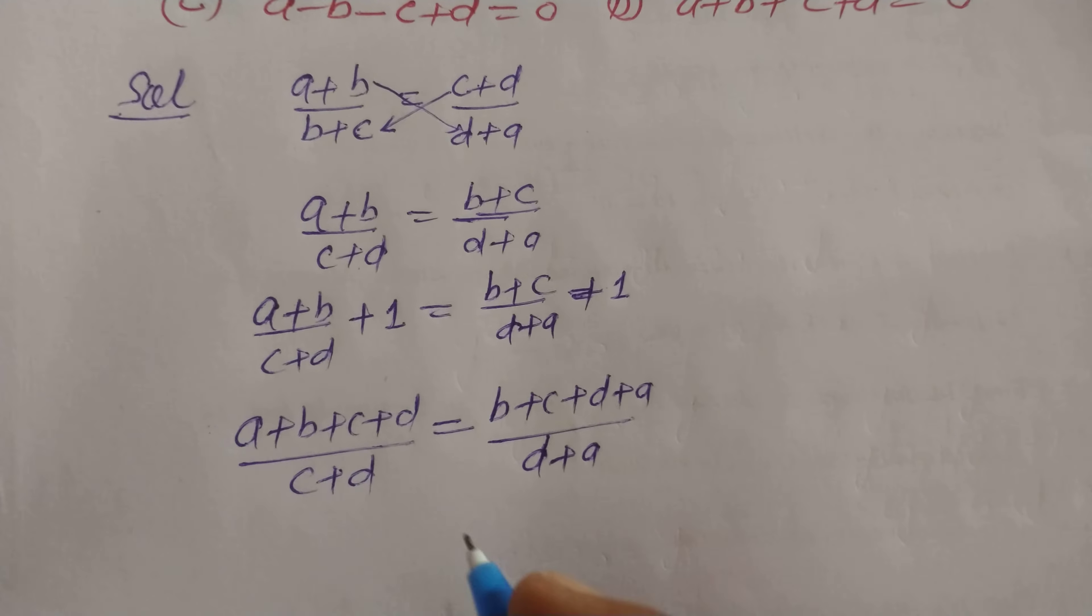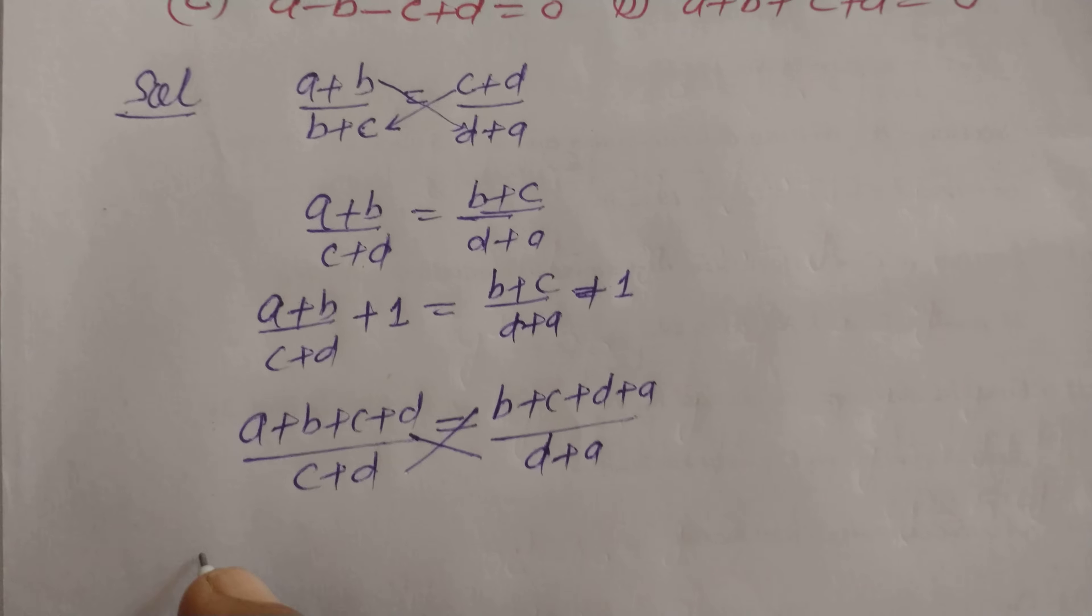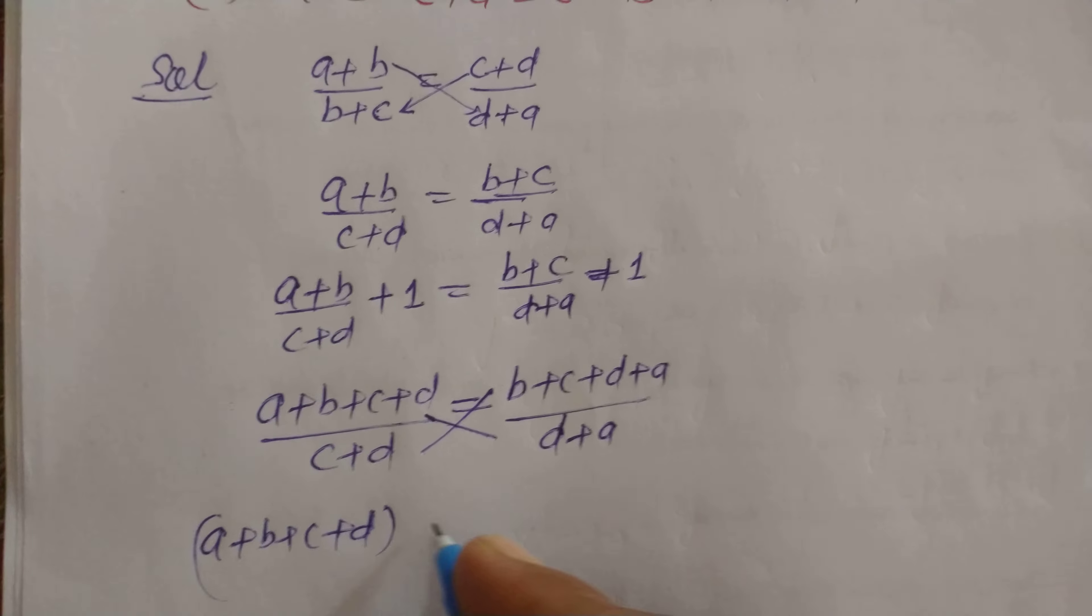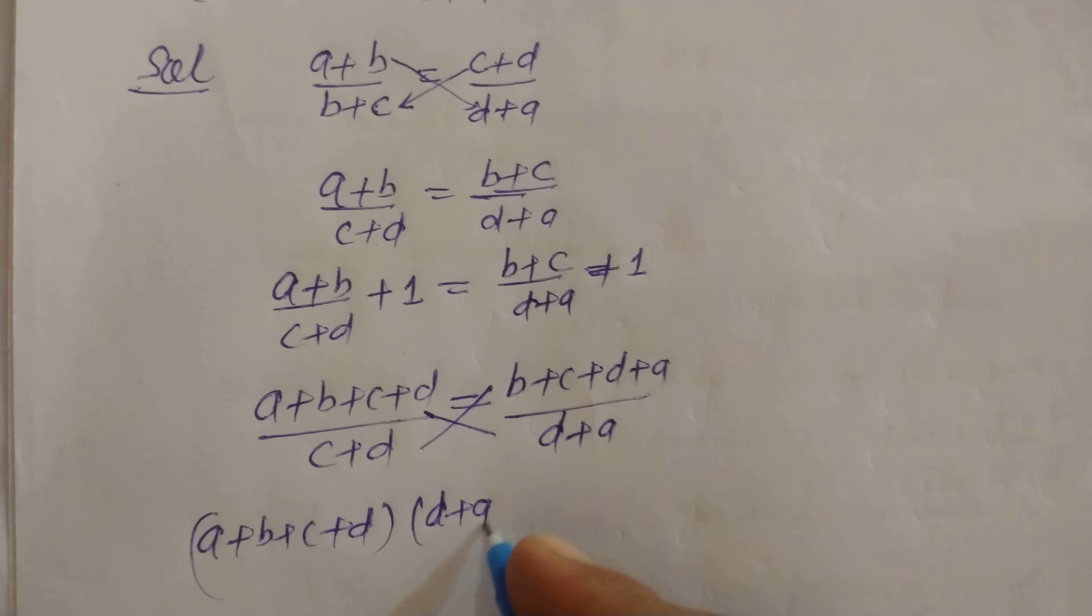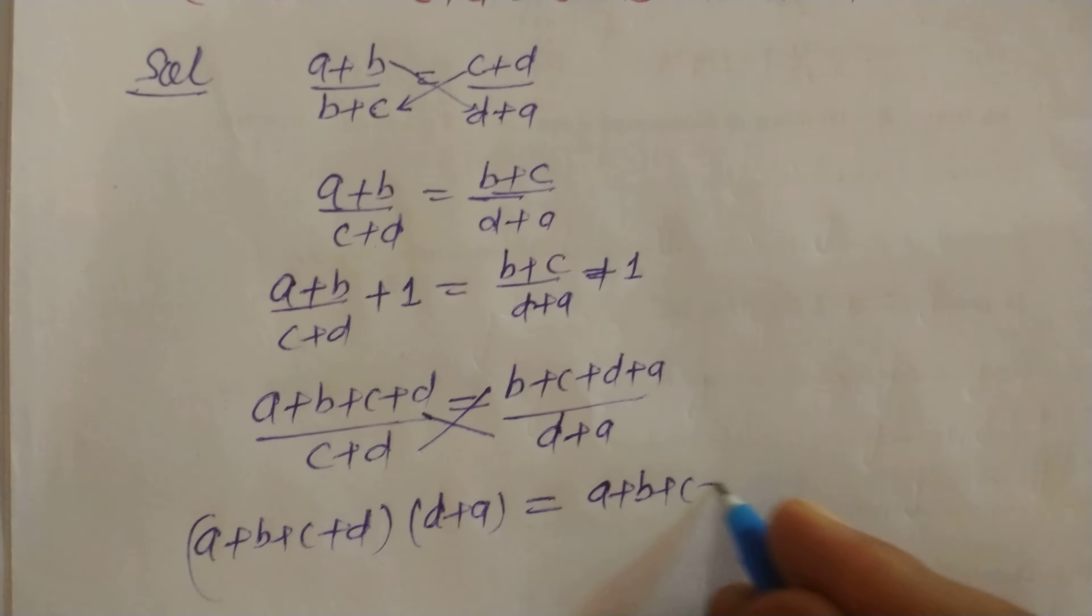Now we cross multiply this and get (A + B + C + D) into (D + A) equal to (A + B + C + D) into (C + D).